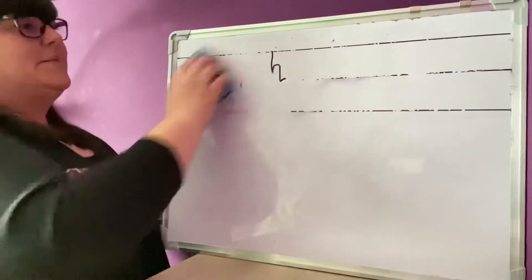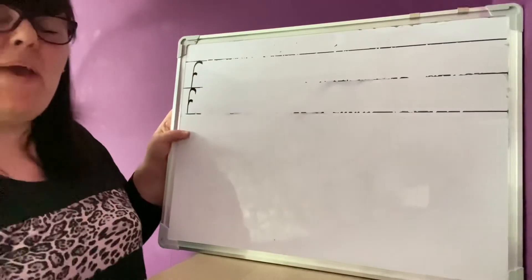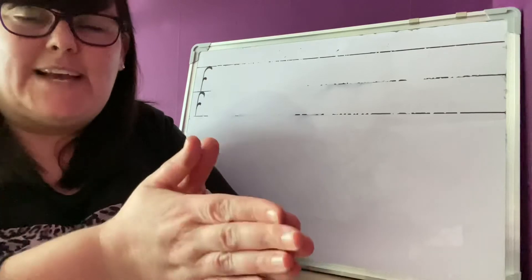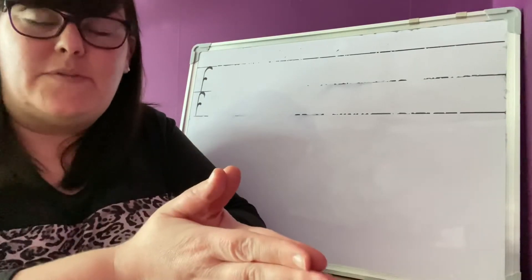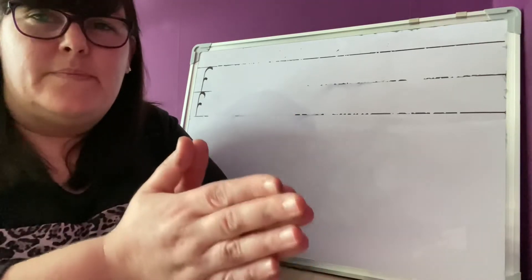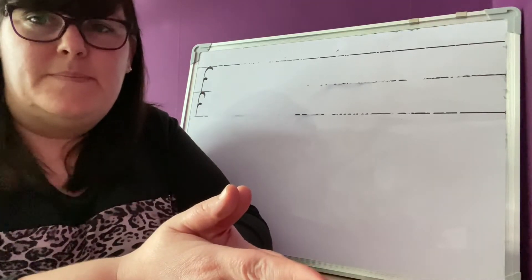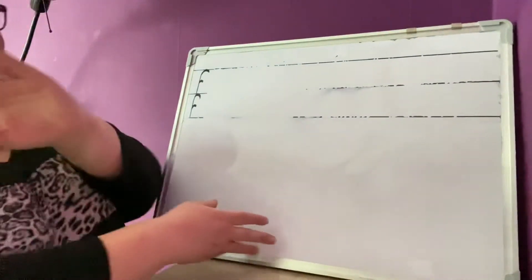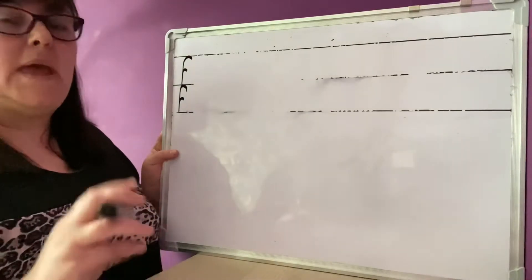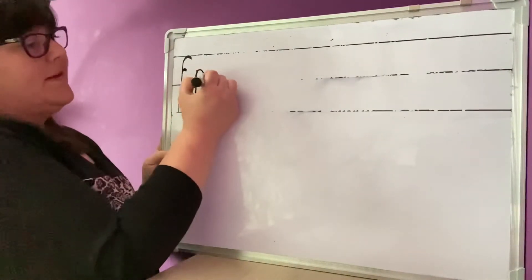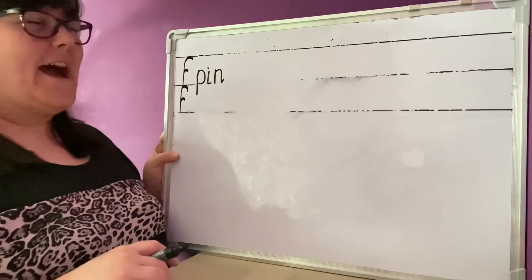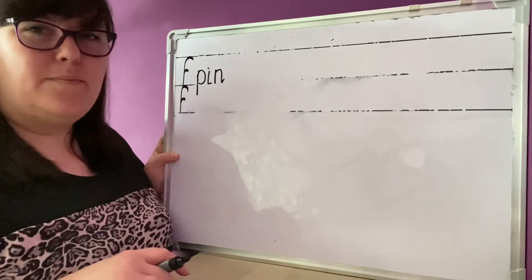Last one then that we're going to build is pinprick. Pinprick. Are you ready? Clap the syllables for me. Ready? Pinprick. Pinprick. So what's the first word? Pin. That's right. Segment it and write it. Pin. Pin. I bet loads of you get all of these before I've even written them, don't you? Pin. Now prick. Pinprick.